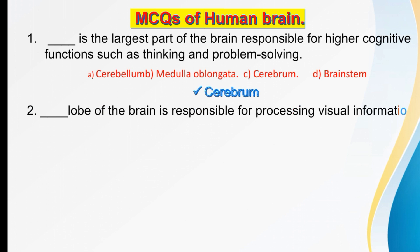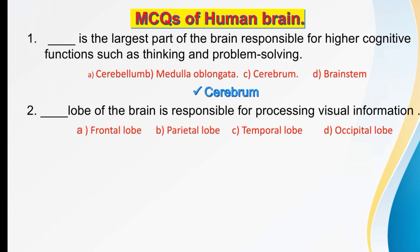Which lobe of the brain is responsible for processing visual information? Our options are frontal lobe, temporal lobe, or occipital lobe. The right option is D — occipital lobe of the brain is responsible for processing visual information.